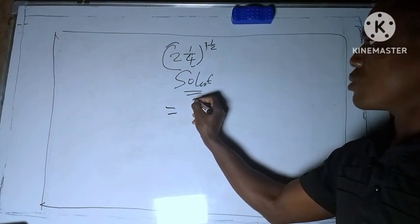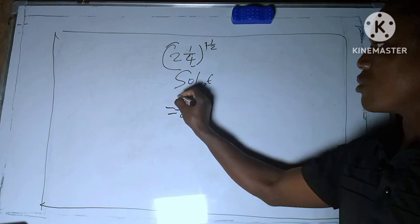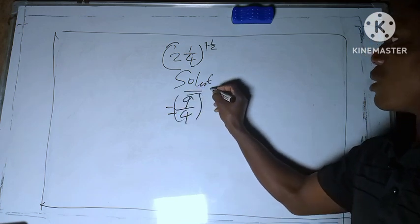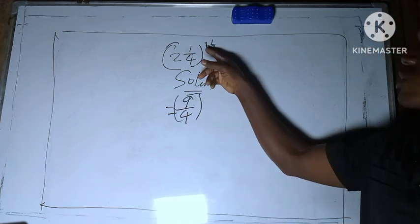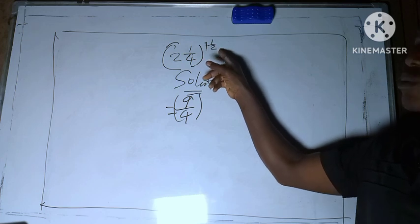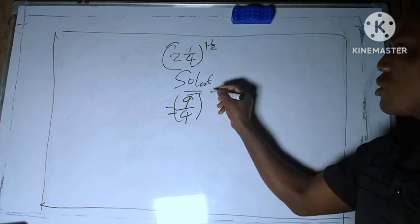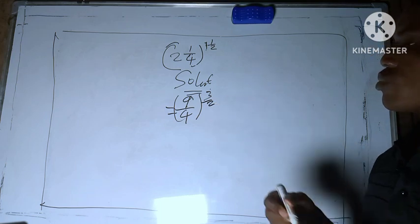So equal to 9 all over 4 raised to power. Do the same thing: 1 times 2 is 2 plus this one, 3. We have 3 over 2.